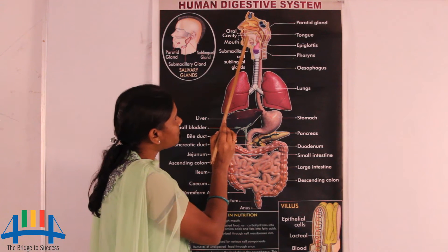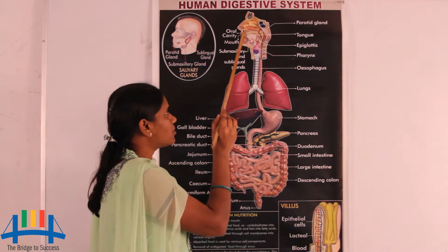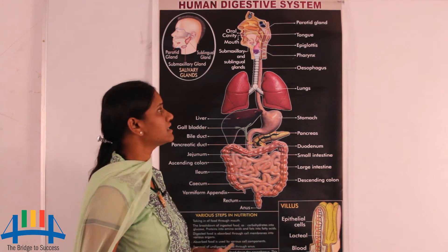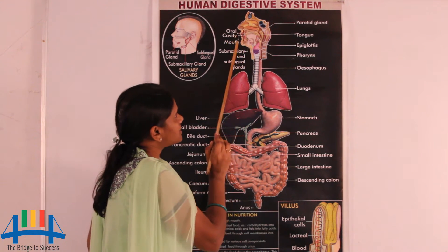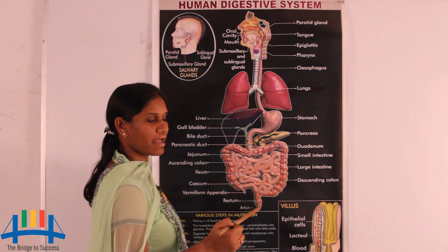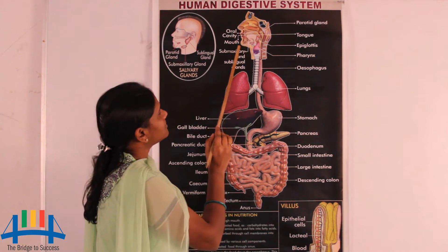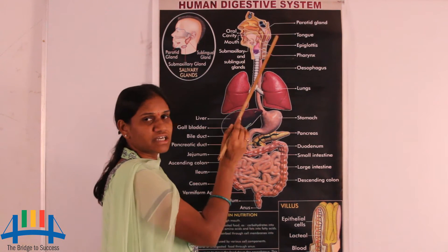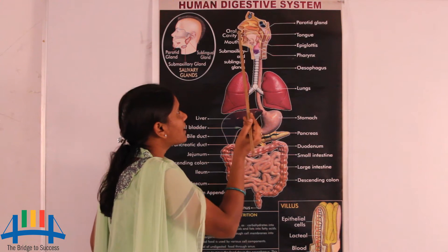First, we start with the mouth. Digestion begins in the mouth. Carbohydrate digestion starts in the mouth and continues all the way up to the anus. In the mouth, salivary glands are present, which help in the digestion of carbohydrates.